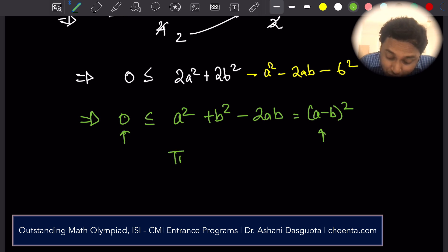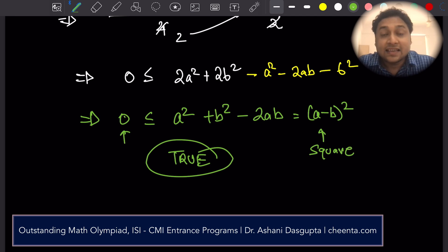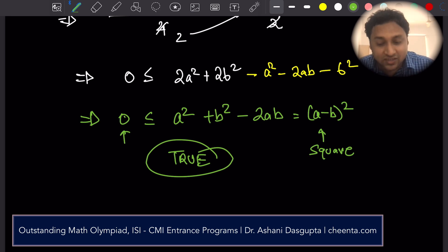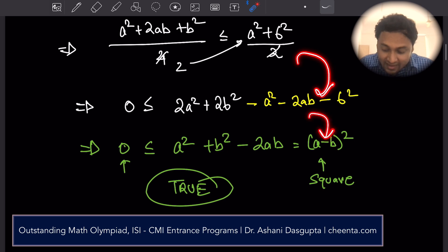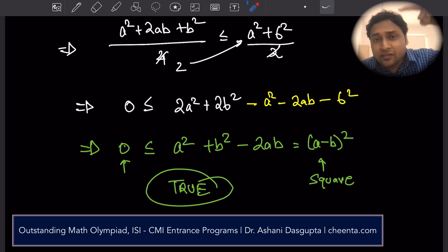What we get is 0 is less than or equal to A minus B whole square. This is obviously true because any square number, A minus B whole square is a square number. Any square number is greater than or equal to 0. It can never be less than 0. So what I just did is a very important problem solving strategy. Whatever I wanted to prove, I started with that. I did some manipulations and I ended up in a statement which is 0 less than or equal to A minus B whole square. I ended up in a statement which is a true mathematical statement. Therefore, whatever we started off is a true statement. This is like the reverse strategy of proof by contradiction. You start with something and you do all the valid steps. You end up with something that is mathematically true. Therefore, what you started off with must be true.